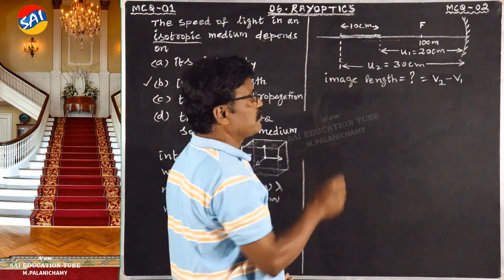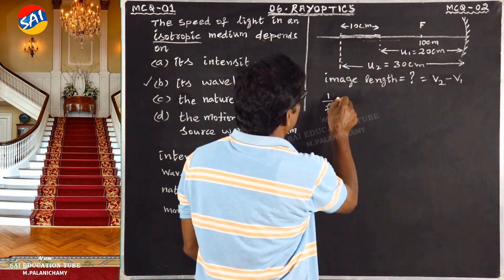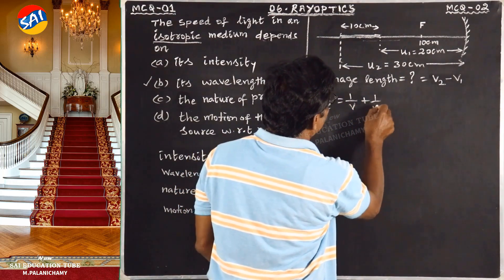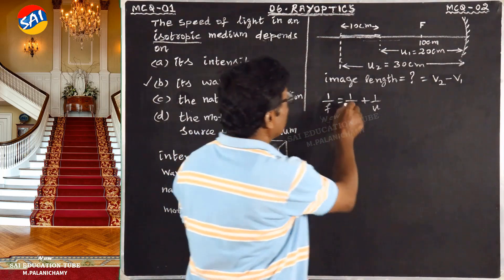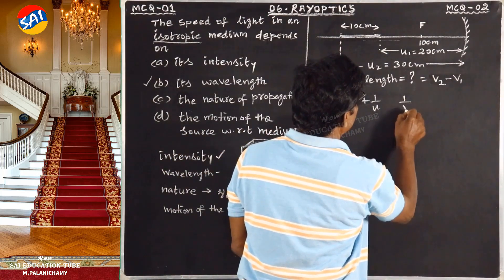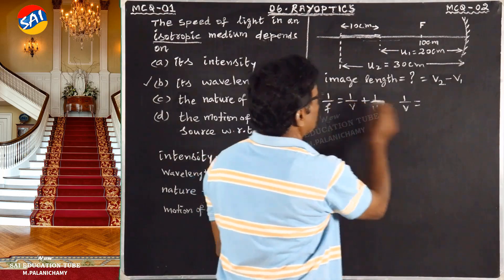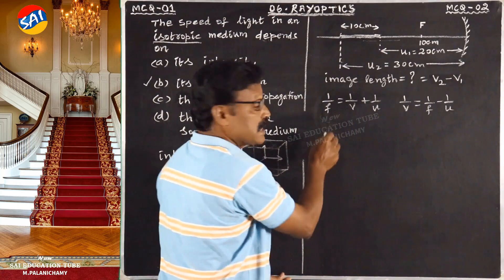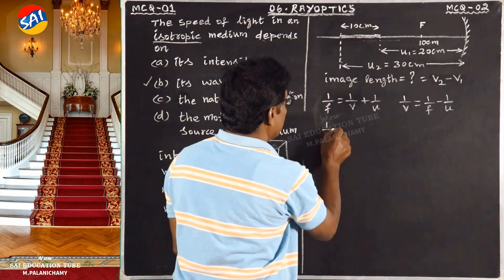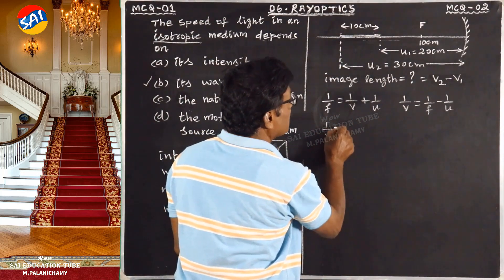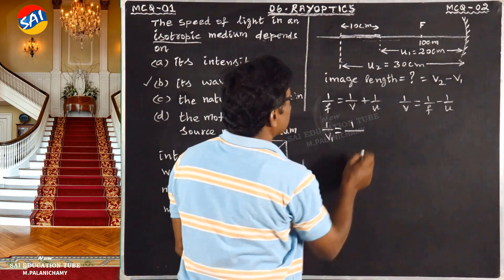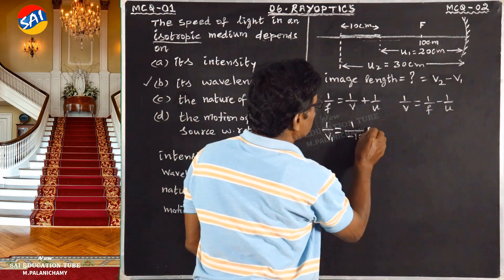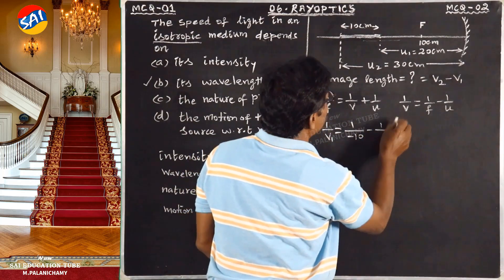Using the mirror formula: 1 by f equal to 1 by v plus 1 by u. If we find out v, we get 1 by v equal to 1 by f minus 1 by u. Therefore, substitute: 1 by v1 equal to 1 by f — that is minus 10 — minus 1 by u1.